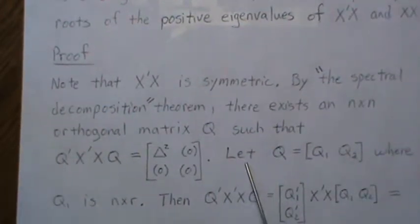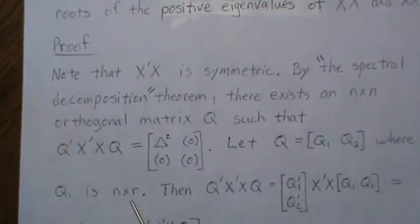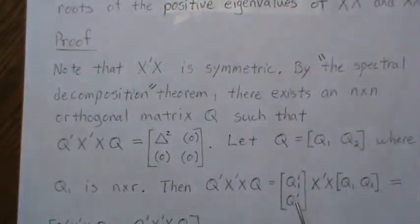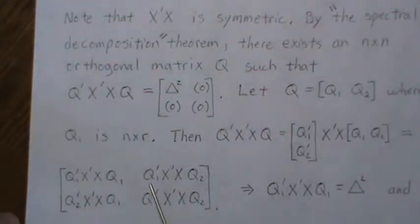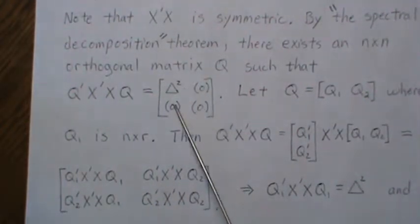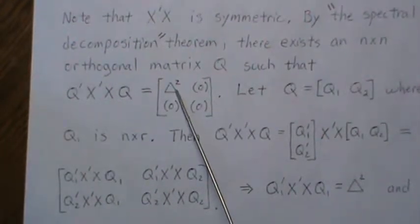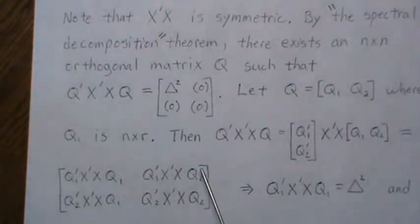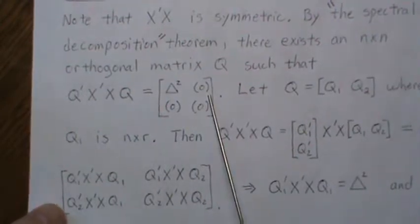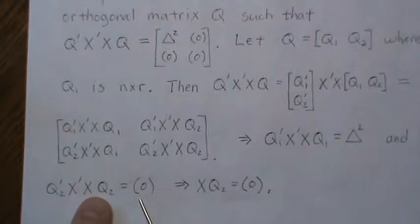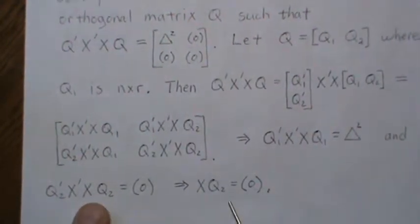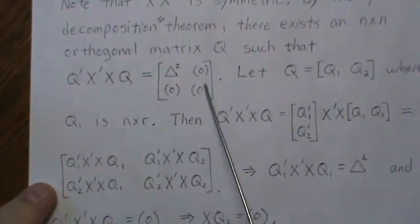Let's break Q into Q1 and Q2, where Q1 is n by r. That product can be thought of as: Q1-prime x-prime x Q1 equals delta-squared, and the cross terms Q1/Q2 give zero. This piece — Q2-prime x-prime x Q2 — equals zero, which means x Q2-prime times x Q2 equals zero, which implies x Q2 equals zero. So we gather that x Q2 = 0.